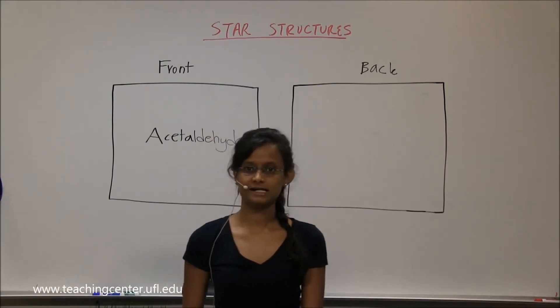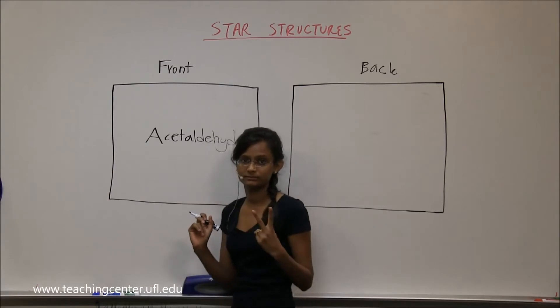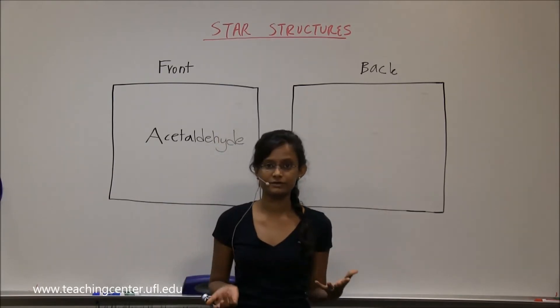Alright, so the next one is acetaldehyde. Acet means two carbon, know that always. And then aldehyde is the aldehyde functional group.